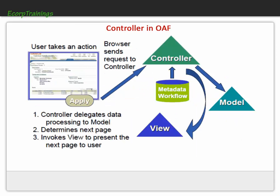This is the detailed design of the controller. Here you can see that when a user takes an action like apply, the browser sends a request to the controller, and then the controller decides what activity has to be performed. The controller either delegates data processing to the model, or determines the next page and invokes the view to present that next page to the user.